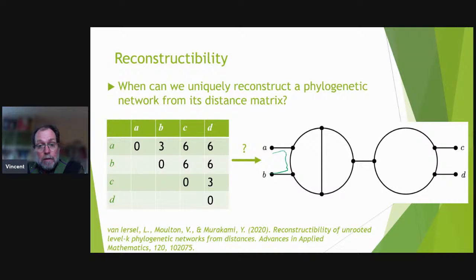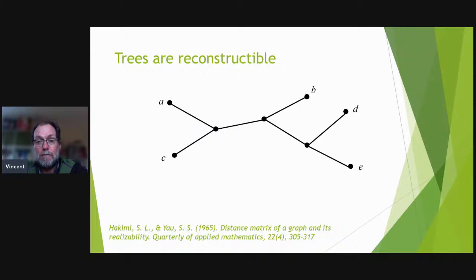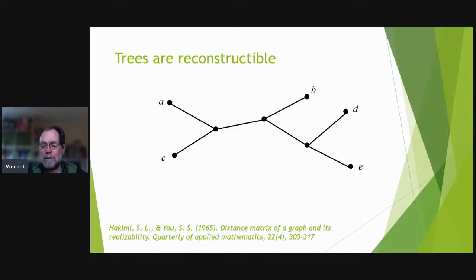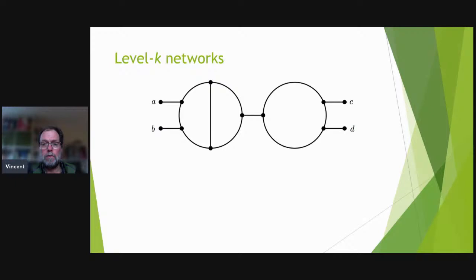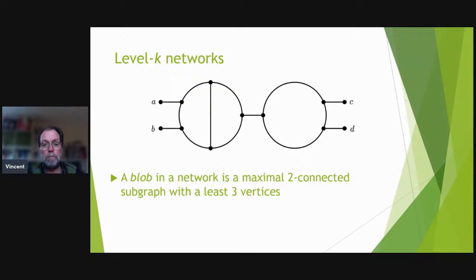Trees are always uniquely reconstructable from their distance matrix — this was shown in 1965. But for networks this is less studied. To organize our results, we use the concept of a level-K network. A block is a maximal two-connected subgraph with at least three vertices — two-connected meaning no single vertex removal disconnects it.